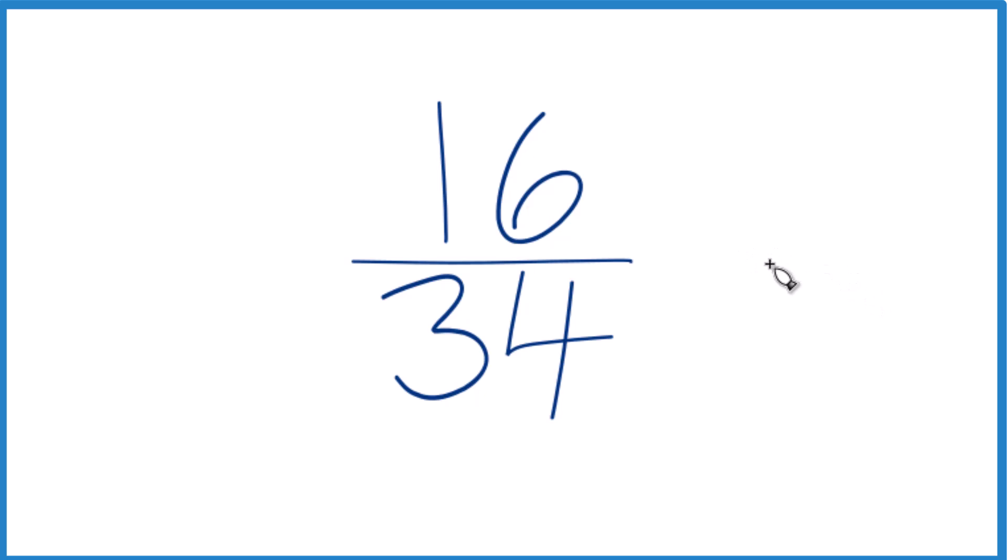To do that, we can find a common factor for 16 and 34, something that goes into 16 evenly and 34 evenly. But since they're both even, I'm just going to divide them by two.